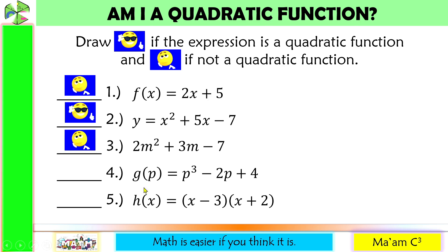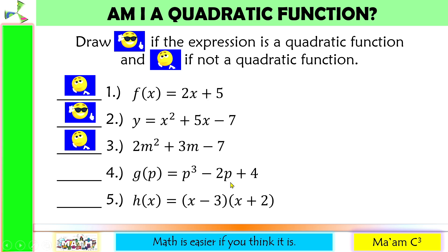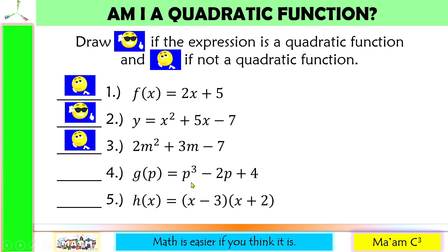Next, I have the dependent variable, an equal sign, and the independent variable, but the highest exponent of the independent variable is 3, so this is not quadratic.